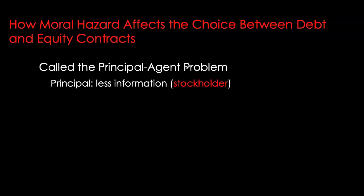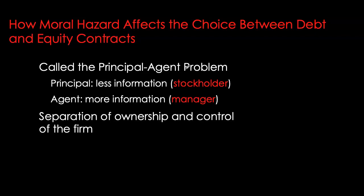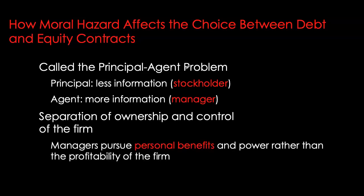In equity contracts, we have stockholders or the principals, who typically have less information about the firm or the way it is being run. The agents, or the managers of the firm, inherently have more information because they deal with the daily operations. The problem arises because of the separation of ownership and control — managers may act in their own interest rather than the interest of shareholders, with less incentive to maximize profits and a higher incentive to pursue personal benefits.